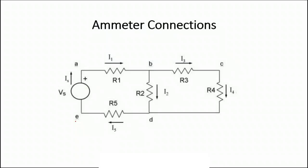Let us start with the first current measurement. As you can see, the supply is directly connected with the resistance. Every time for the ammeter connection, we have to break one connection and then introduce the ammeter in series. The positive of the supply is connected with the positive of the ammeter, whereas the negative of the ammeter is connected with R1. There is no positive and negative for a resistance, so it can be connected either way.